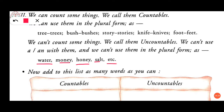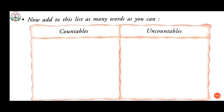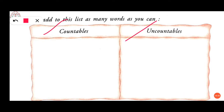Now add to this list as many words as you can. Two blocks are given — write countable things in the countable column: pen, chair, bus, houses, trees, books, bags. For uncountable, examples we have learned are: water, money, honey, salt, sugar. Also star, wheat, and rice all come under uncountables.